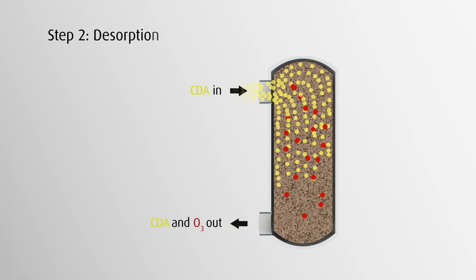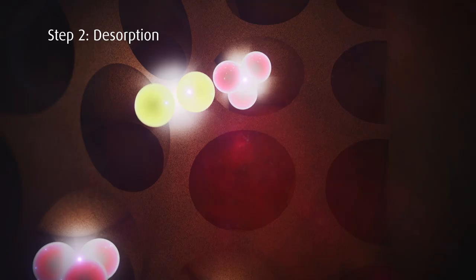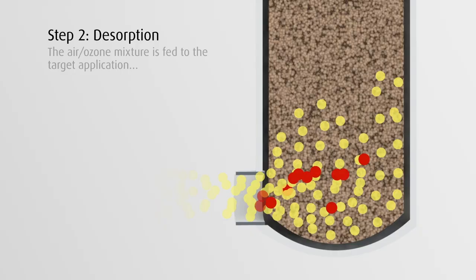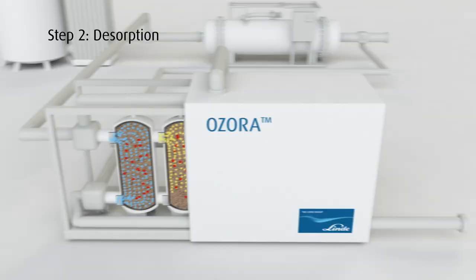Then, in the desorption step, compressed dry air flows through the bed and releases ozone from the pores. The air-ozone mixture is then supplied to the target application at a stable preset concentration and flow rate.